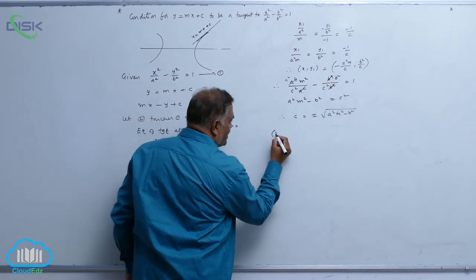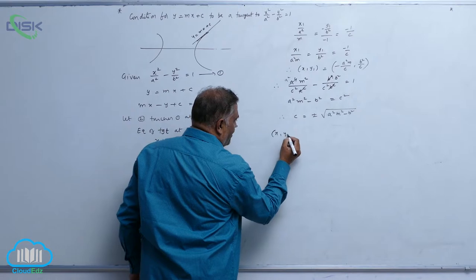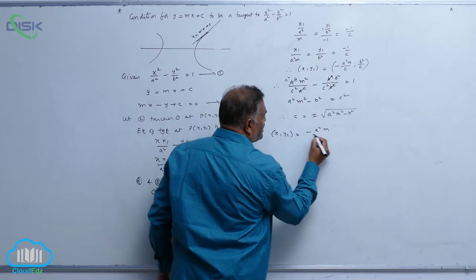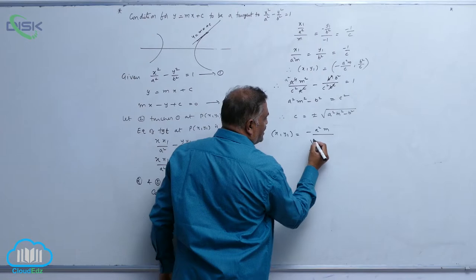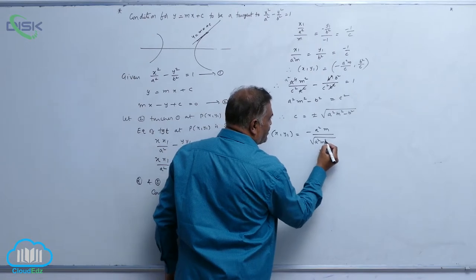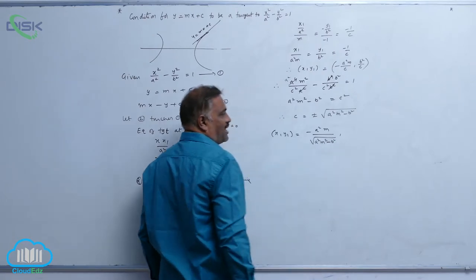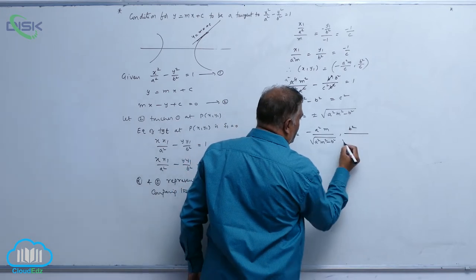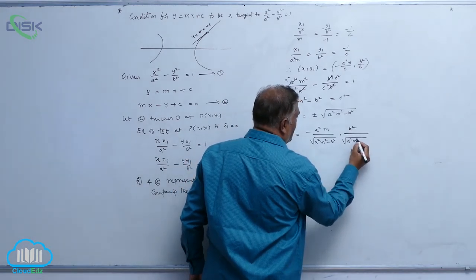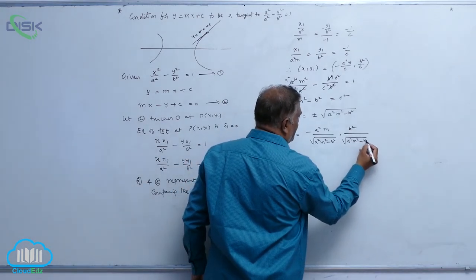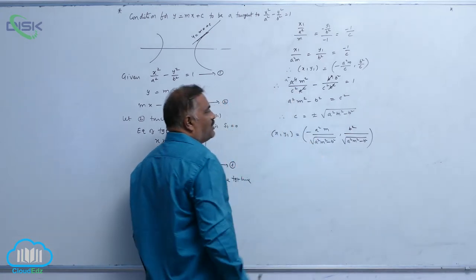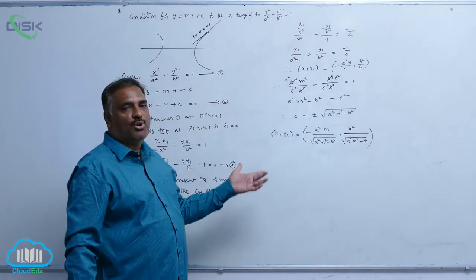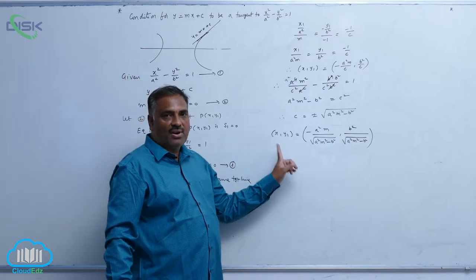The point of contact is (-a²m/c, b²/c), which can be written as (-a²m/√(a²m² - b²), b²/√(a²m² - b²)). This is a very key point — it gives the coordinates of the point of contact.